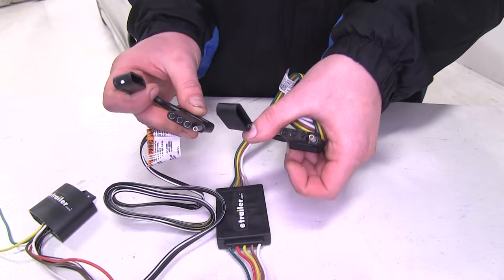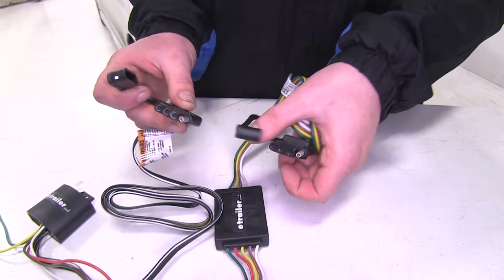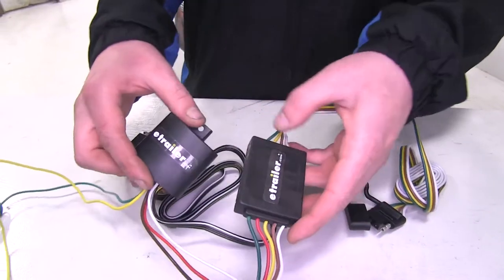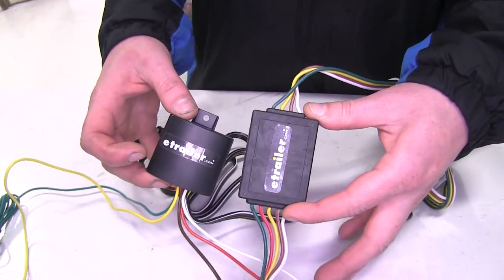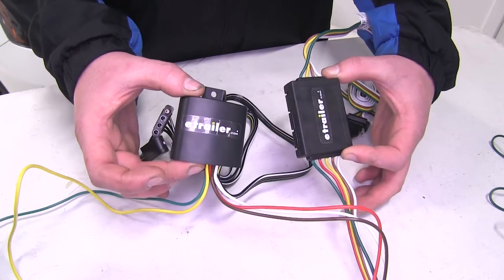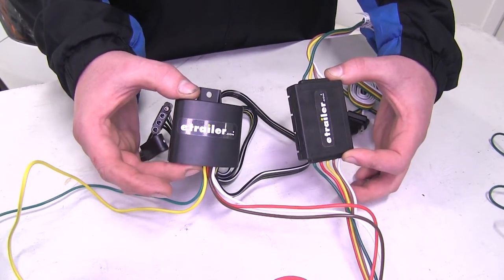They're both going to work with five, six, and seven pole adapters. And both control boxes are going to be circuit protected. So if there's a short on your trailer it'll shut it down and it won't affect your vehicle's wiring harness.